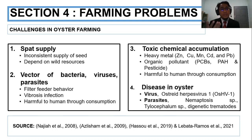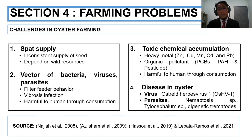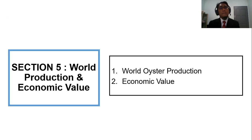The third challenge is that, because of the oyster's filter-feeding behaviour, it also accumulates chemical toxins such as heavy metals and organic pollutants, which can be harmful to human consumption over a long period. The fourth challenge is disease — the most notable being the oyster herpes virus, and parasites such as Nematopsis tychelobii and Gymnetic trematodes.